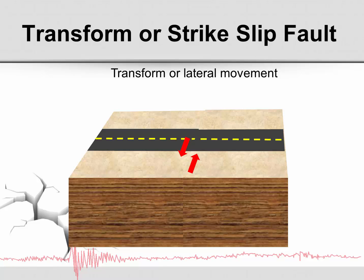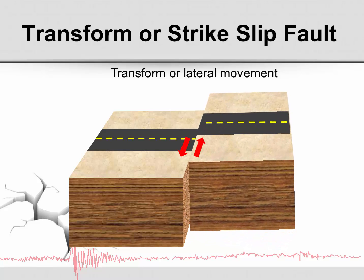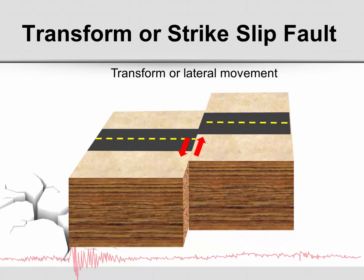Finally, a transform fault or a strike-slip fault occurs with lateral stress. When two parts of the earth's surface are moving in opposite directions with respect to each other, one may slide, causing a transform or strike-slip offset.